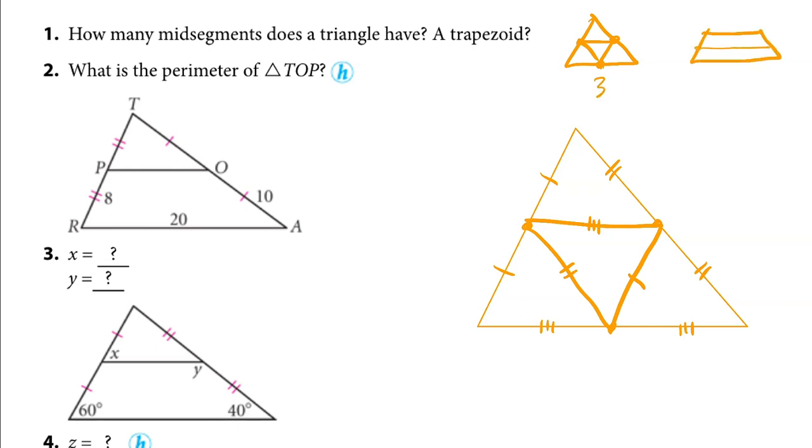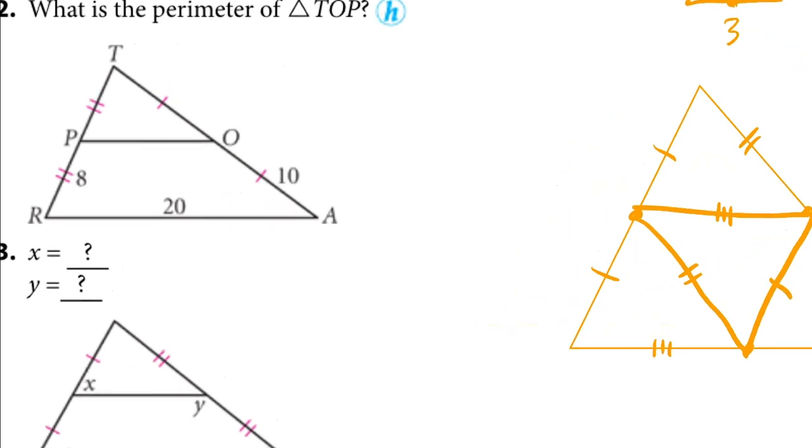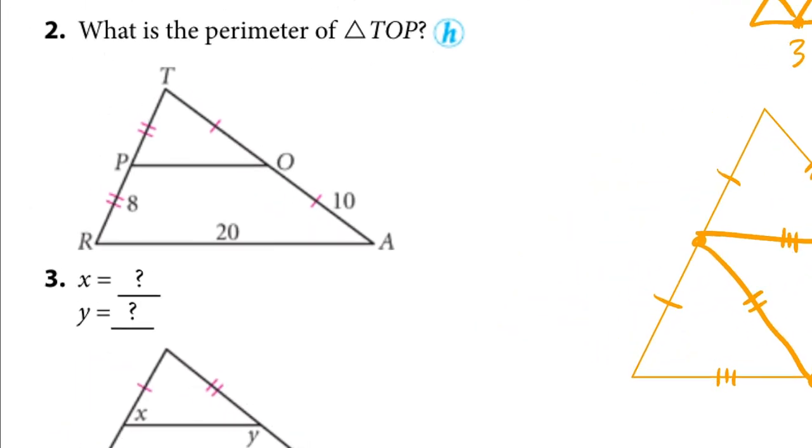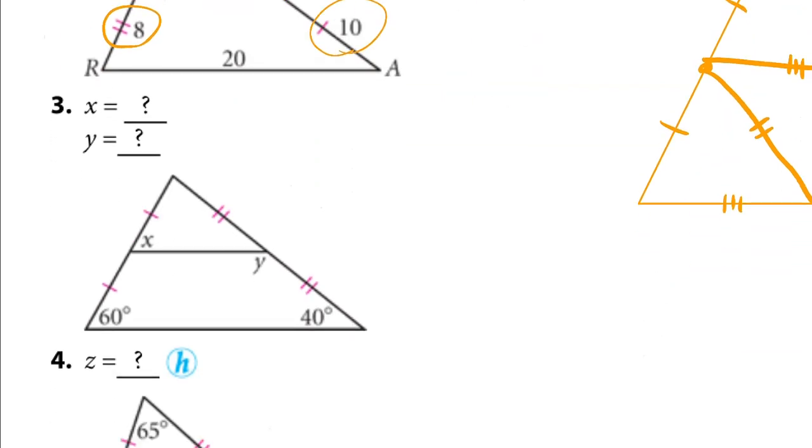Trapezoid, we only talk about the one interesting one. So that's the answer number one. What's the perimeter of TOP? Oh, that's a tricky one. Well, this is a midpoint. So if that's eight, this is eight. And this is 10, so this is 10. And so the perimeter is just you add those up. Total of 16, total of 20. So that's a perimeter of 56.